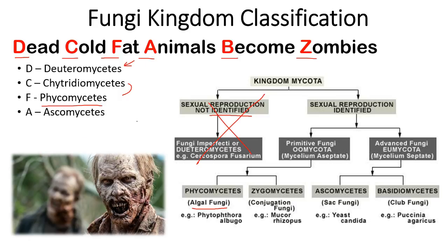The third one, A, stands for Ascomycetes, also known as sac fungi under the Eumycota division. An example of Ascomycetes is yeast or Candida. Then B stands for Basidiomycetes, also known as club fungi. Examples of Basidiomycetes include Paxinia and Agaricus.